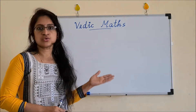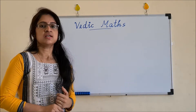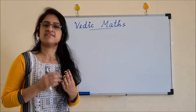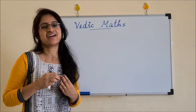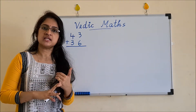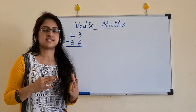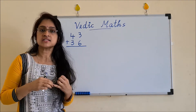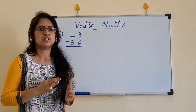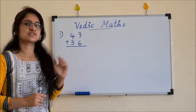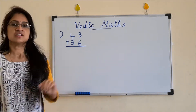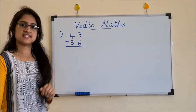For two digit or double digit addition there are four possible combinations. We will see them one by one. If the carry combination and non-carry combination concept and the end number concept are both very thorough, this is going to be very easy for you. Let's see the first example.